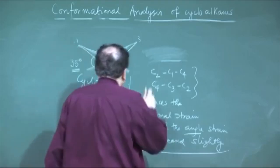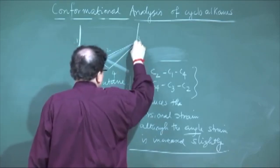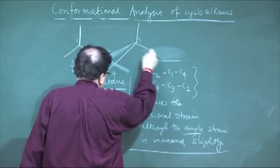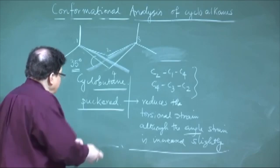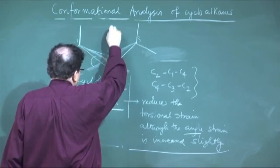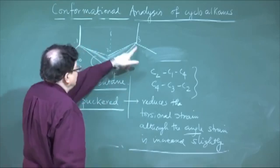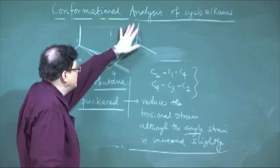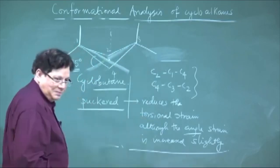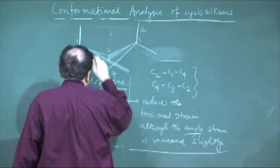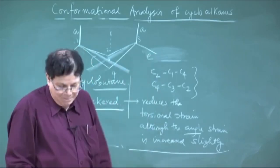The interesting point is: while in this puckered form, you have bonds pointing almost upwards at C2 and C4, and the other two bonds at C1 and C3 point in the other direction. This molecule has a C2 axis going through it — if you rotate it, this comes here and that goes there — provided all substituents are the same. The bonds that are coaxial with the C2 axis are called axial, and the others are equatorial bonds in cyclobutane.